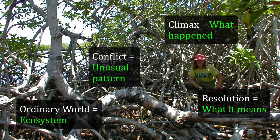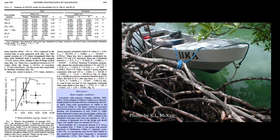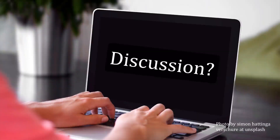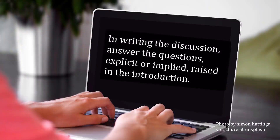The resolution follows the climax of the story and is where everything is explained. In the scientific paper, the discussion section is where you tell the reader what the data mean and how the results agree with or deviate from work reported previously in the literature. Inexperienced writers fail to discuss their findings and instead restate the results with a few references to previous work. In a traditional story, repetition of what has already been described will only annoy the reader, who is looking for a resolution — an explanation for what has happened. To avoid this mistake, the scientific writer needs to focus on answering the questions, explicit or implied, raised in the introduction. This approach adds to the narrative structure and brings the scientific story full circle.